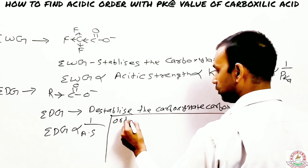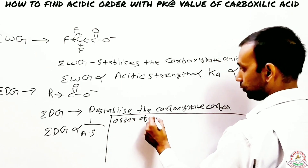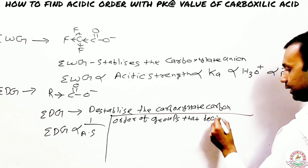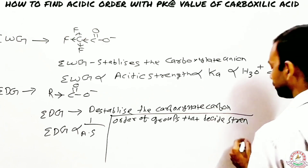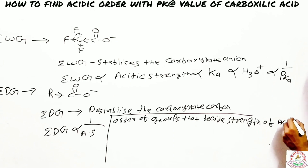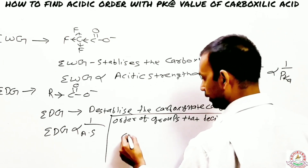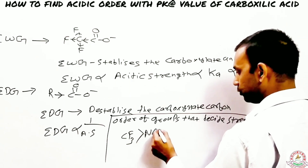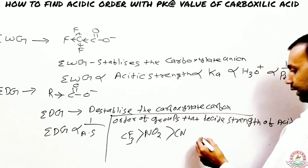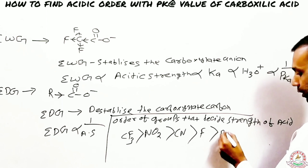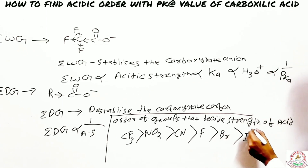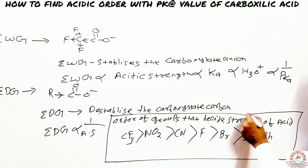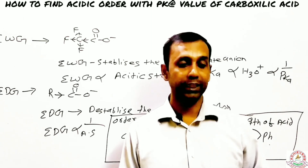The order of groups that determine the acidic strength of an acid is: CF₃ has the highest electron withdrawing effect, followed by NO₂, then CN (cyanide), then F (fluorine), Br (bromine), I (iodine), and finally the phenyl group (Ph). This order helps you decide the pKa or Ka of the acid.